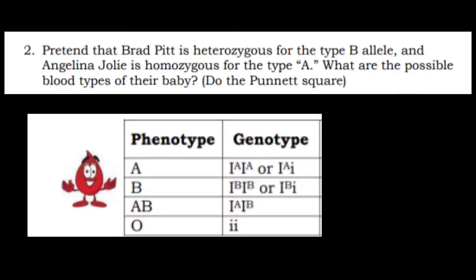Now, let's answer the given problem. Pretend that Brad Pitt is heterozygous for the type B allele and Angelina Jolie is homozygous for the type A. What are the possible blood types of their babies? Now, let's answer using a Punnett square.